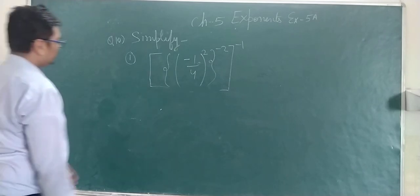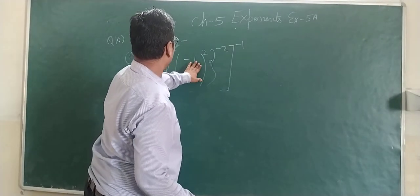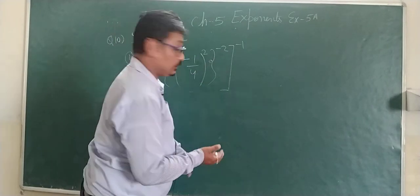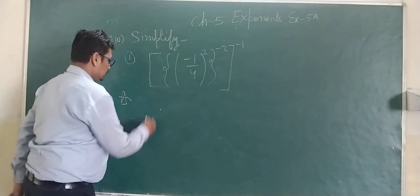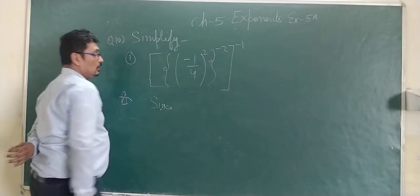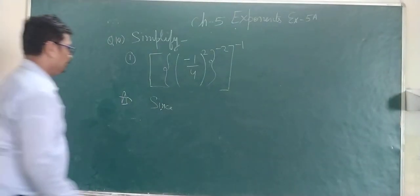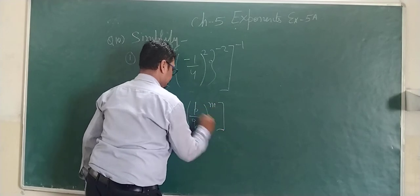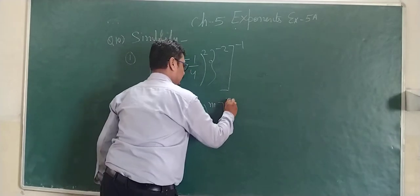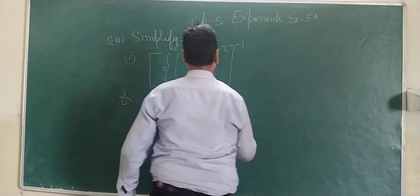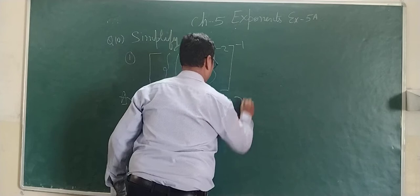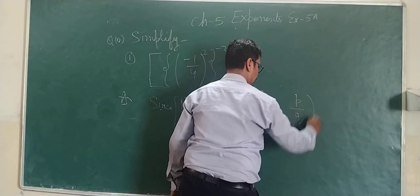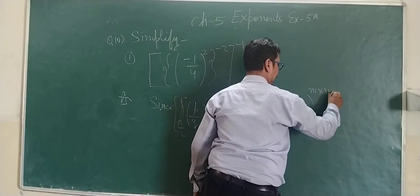Next part: minus 1 upon 4 raised to the power 2, having power minus 2, and the entire having power minus 1. We know p upon q having power m, having power n, having power o can be written as p upon q to the power m multiplied by n multiplied by o.